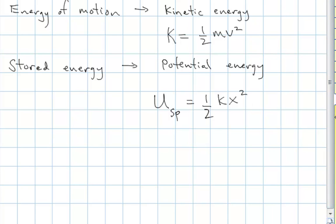There's another type of stored energy we deal with in mechanics quite a bit: the energy that an object has because of its location in a gravitational field — gravitational potential energy. I'll call it mgh, where h is the height above some reference location. If an object is sitting on the floor it has no stored energy, but if we lift it higher, the gravitational force can act on it over a longer distance, increasing its energy of motion.